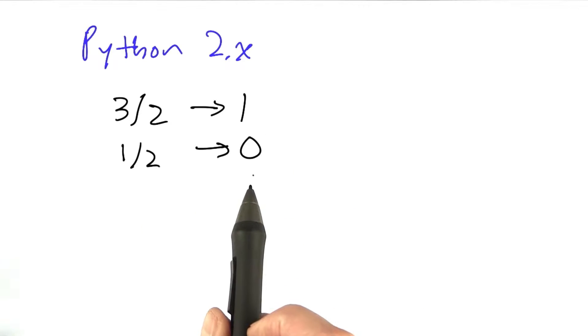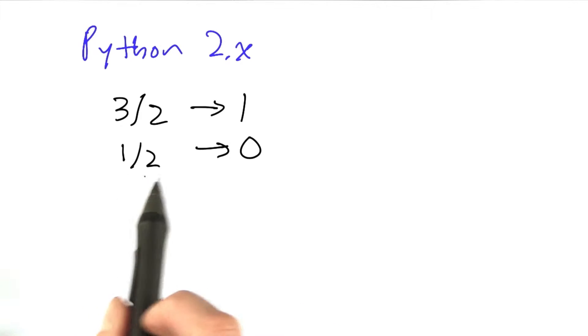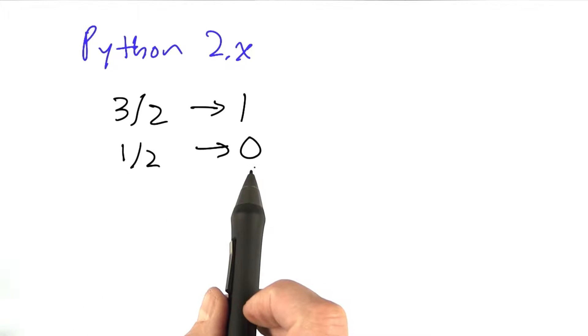The reason is, in their wisdom, the designers of Python said, well, if you're doing integer division, you probably want an integer answer, and we'll do the best we can and truncate to give you the answer.